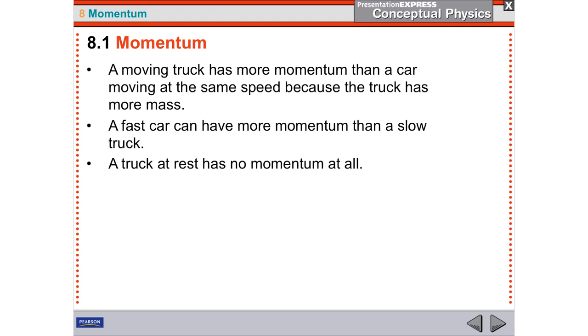We've looked at this idea that a fast car can have more momentum than a slow truck if it's going much faster. If you have rho equals mass times velocity and you have huge velocity and little mass, you can have big momentum. Even though a truck is much more massive than the car, if it's going a lot faster, the car would have more momentum.